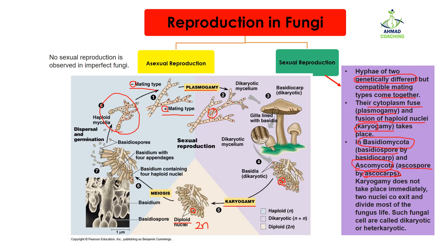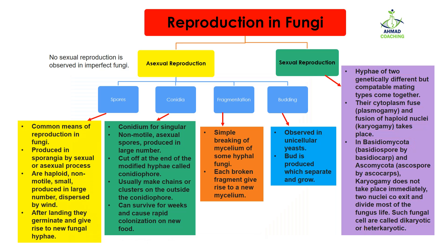However, this is not always the case. Sometimes karyogamy does not take place — the two nuclei coexist and divide for most of the fungus's life. The negative and positive nuclei stay inside the cell without fusing, so one cell has two nuclei. Such fungal cells are known as dikaryotic or heterokaryotic. Hetero means different — heterokaryotic means they have different nuclei. Di means two — dikaryotic means two nuclei. So they can be called either dikaryotic or heterokaryotic.